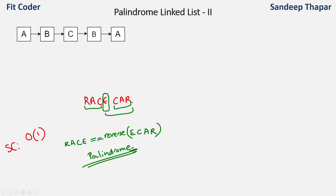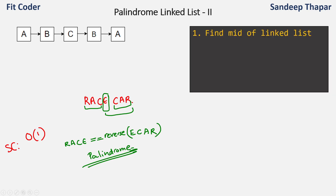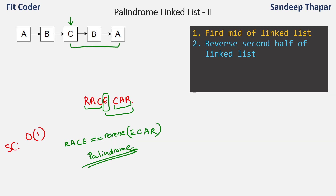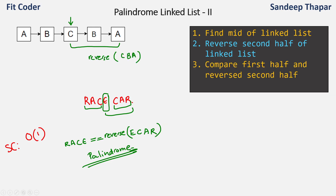We have broken this down into three steps. First, find the midpoint of the linked list — for the list a, b, c, b, a, the midpoint is c. Second, reverse the second half starting from c, giving us a reversed portion of c, b, a. Third, compare the first half a, b, c with the reversed second half. If these are equal the linked list is a palindrome; if there is a mismatch we return false.